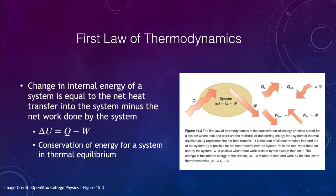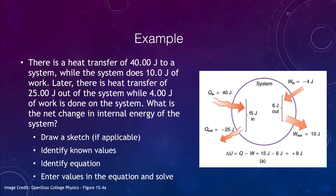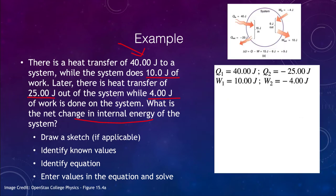Let's look at an example. We have a system with 40 joules of heat transfer to the system while the system does 10 joules of work. Later on there is a heat transfer of 25 joules out of the system while 4 joules of work is done on the system, and we're looking for the net change in internal energy. We have a diagram here to help keep track of everything.